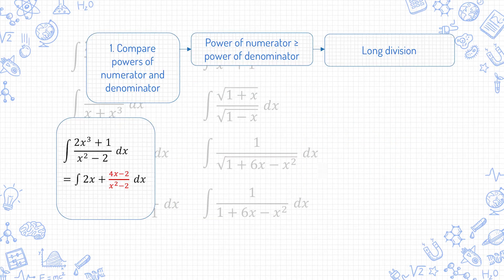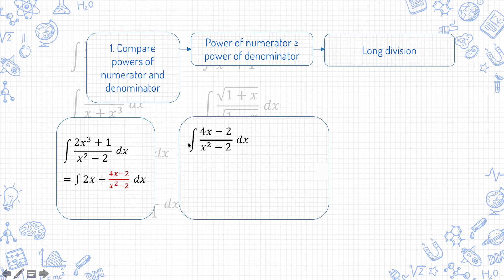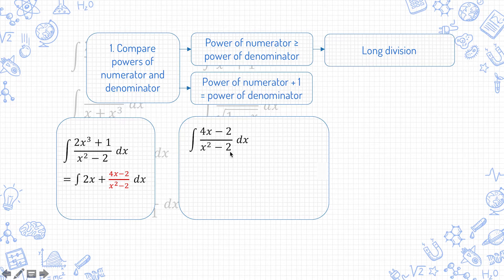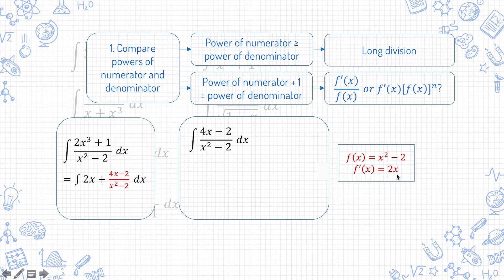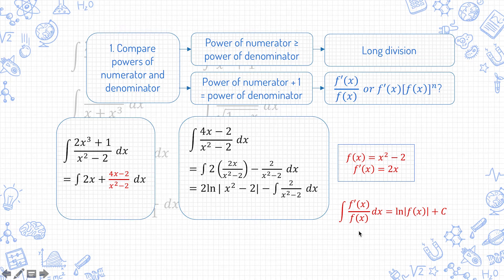After performing long division, or if you cannot perform long division, you might have something like this. The power of the numerator is one less than that of the denominator — that's a clue that it is probably in the form f'(x) over f(x) or f'(x) times f(x) to the power of n. So choose the higher power as f(x), and that gives f'(x) equals 2x. I can pull out the 2x like this — 2 times 2x is 4x — then minus 2 over x squared minus 2. Since integrating f'(x) over f(x) gives ln of mod f(x), this part will become 2 ln of mod x squared minus 2, and you can just continue on your own from here.